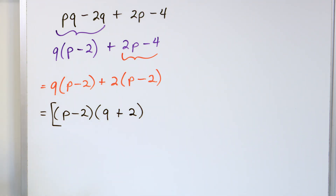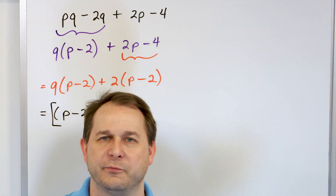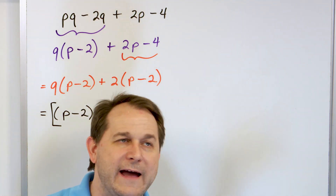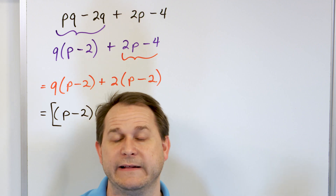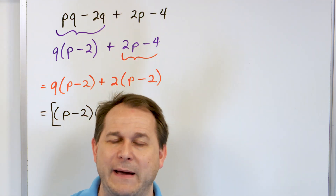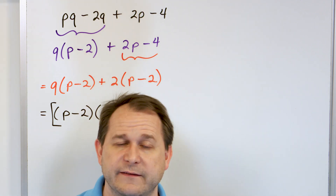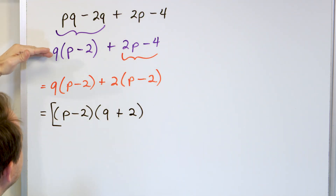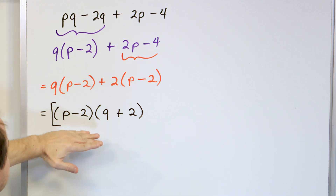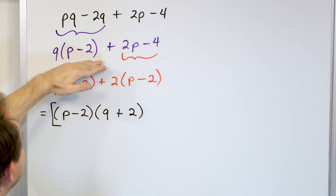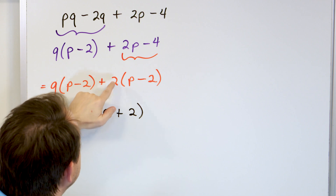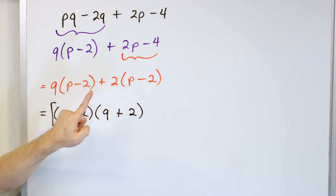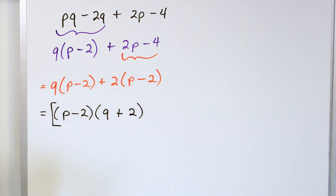I'll be honest — unless you're a genius at seeing patterns, you can't look at the original problem and immediately see that it factors into this form. For the rest of us, you take it step by step. I factored q out of the first two terms, then factored 2 out of the last two terms, and around that point I realized they match. Pulling out p minus 2 as the common factor: p minus 2 times q gives the first part, plus p minus 2 times 2 gives the second part. Final answer: p minus 2 times q plus 2.